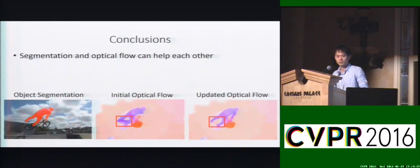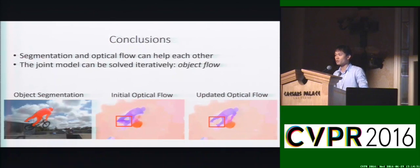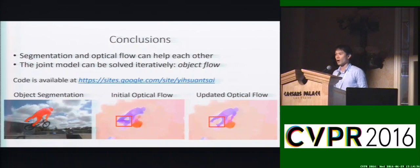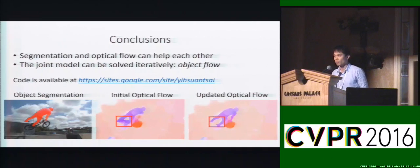To summarize, we show that segmentation and object flow can help each other, and we propose a joint model that can be solved efficiently. You can download our code here, and if you want to know more details, please come to our poster.